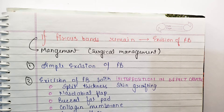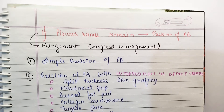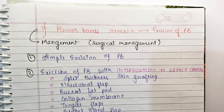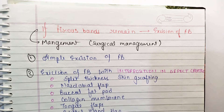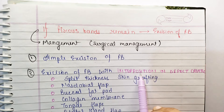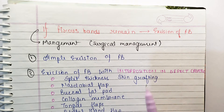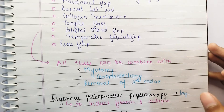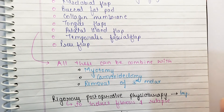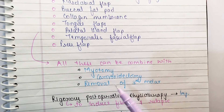For your university examination as well as for NEET PG, you should know that if fibrous bands remain, the surgical management includes: excision of fibrous bands, and excision of fibrous bands with interposition in the defect created, using flaps. Myotomy, coronoidectomy, and removal of the third molar can also be combined depending on the condition of the patient.